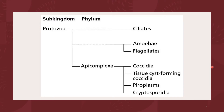Examples of ciliates include the Paramecium. For amoebae, we have Amoeba proteus and Entamoeba. For flagellates, a representative genus is Trypanosoma. Coccidia examples include Eimeria; tissue cyst-forming coccidia include Sarcocystis; piroplasms include Babesia and Theileria; and we also have Cryptosporidia.